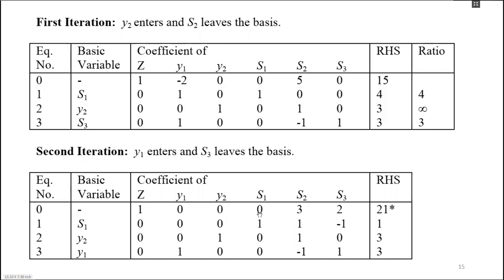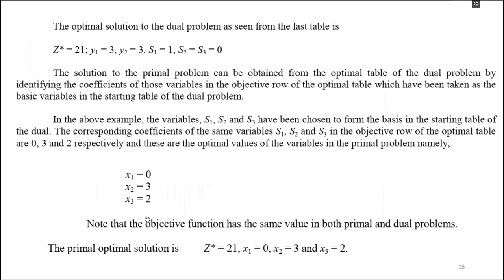The coefficients of s1, s2, s3 in the optimal table are 0, 3, 2 — so x1=0, x2=3, x3=2. Note that the objective function has the same value in both the primal and dual problem: z=21 in both cases. Having solved the dual, we can also read the primal solution directly, verifying that both primal and dual yield the same optimal objective value.